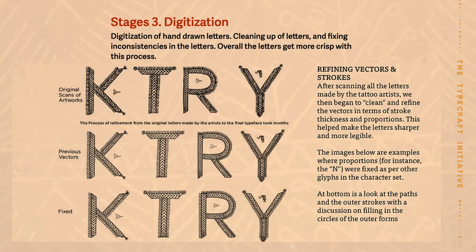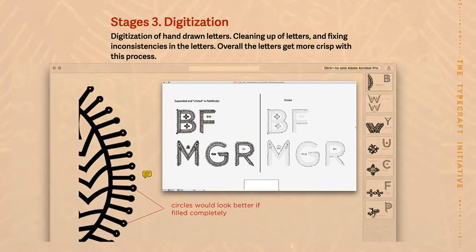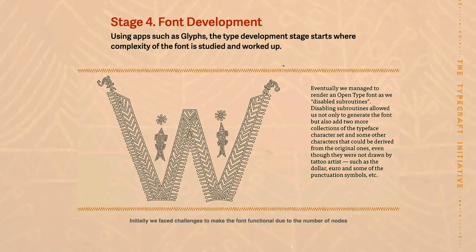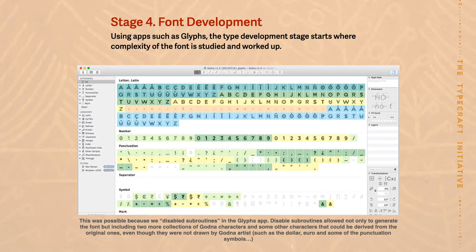After this comes the stage of digitization, where we scan the artwork, trace it, and vectorize it. We fix any inconsistencies, irregularities, or proportional issues, and then finally get into font development. This is done in the Glyphs app. This typeface has a large number of nodes reflecting the complexity of the tattoos themselves, which posed quite a lot of problems. We managed to work around it by disabling subroutines in the Glyphs app, which enabled us to come up with a large font set with an extended character set as well.